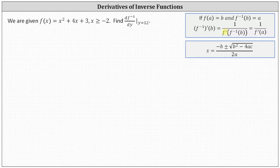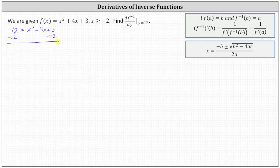To use this formula, we'll first have to determine the x value or input of f of x that gives an output or y value of positive 12. So we'll begin by setting f of x equal to 12 and solving for x. Subtracting 12 on both sides and simplifying, we have zero equals x squared plus 4x minus nine. Unfortunately, this is not factorable and we'll have to use the quadratic formula, which is included here on the right.